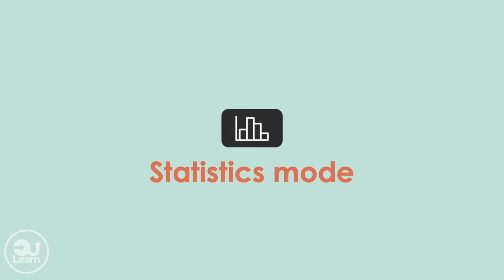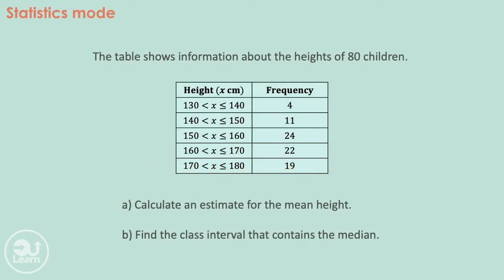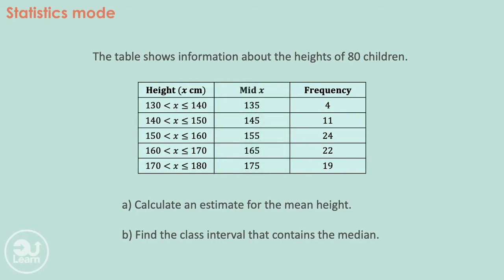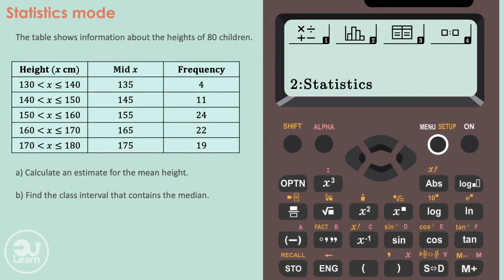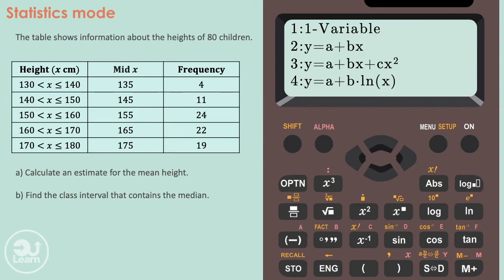The next useful feature on this calculator is the statistics option. This mode runs calculations on data you input and produces a variety of useful information. To help show this, let's look at a typical exam question: the table shows information about the heights of 80 children — calculate an estimate for the mean height and find the class interval that contains the median. Before using the calculator, we first find the mid values of the inequalities. Then we get the calculator into statistics mode by pressing menu and navigating to statistics, then pressing 1 for the one-variable option.